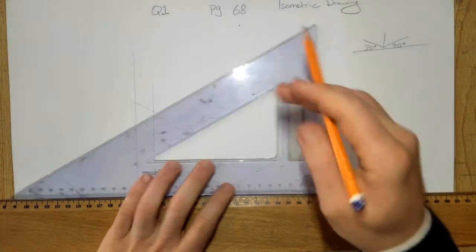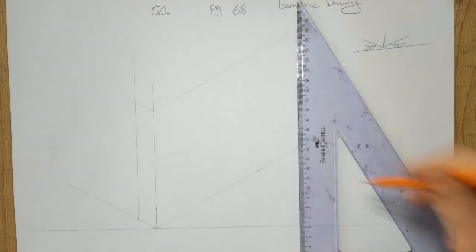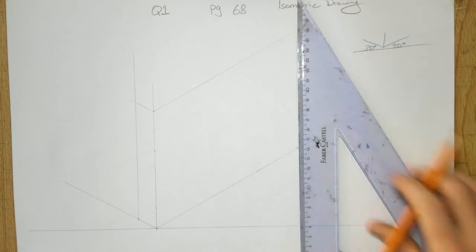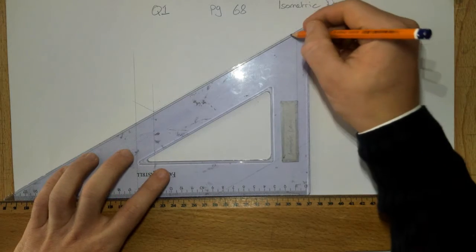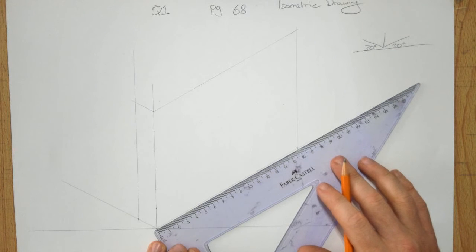First thing I'm going to do is draw out my grid, 20 mil squares also on the bottom.